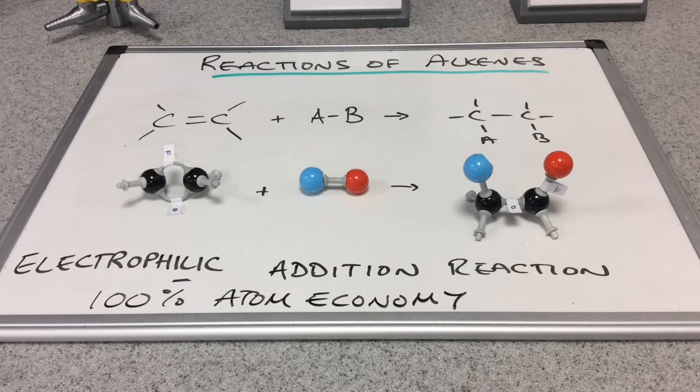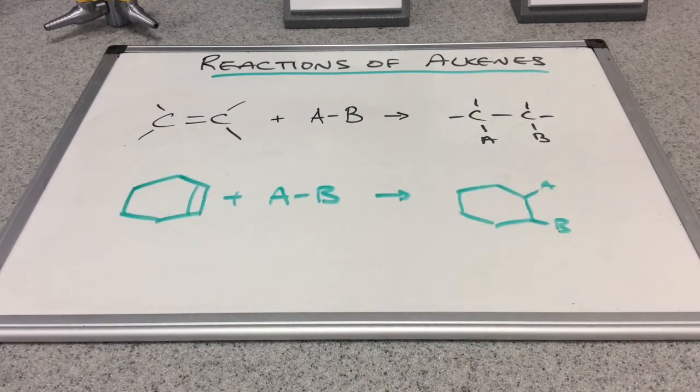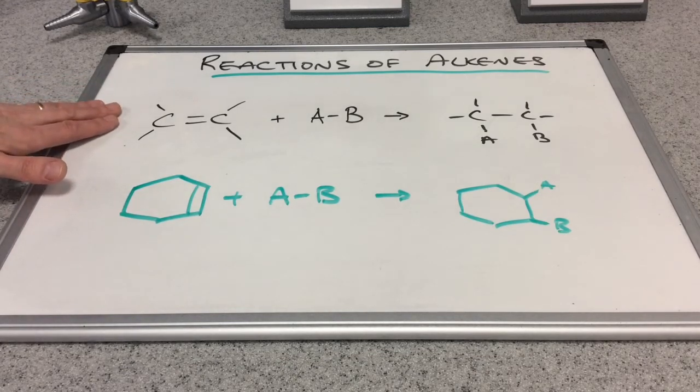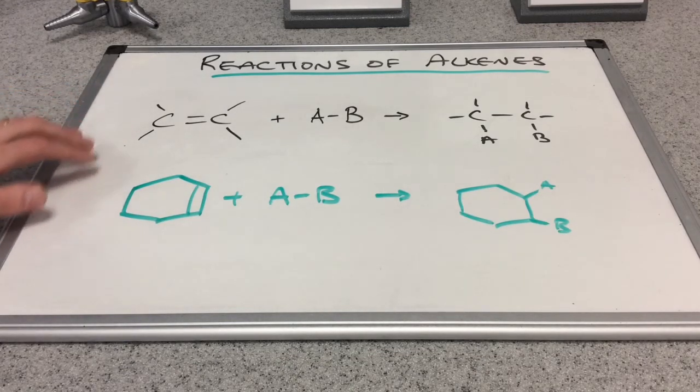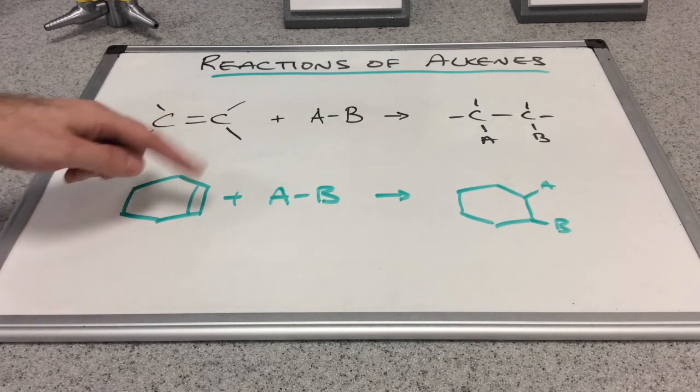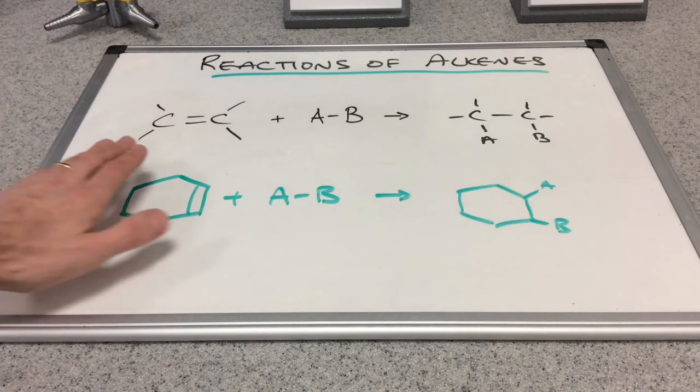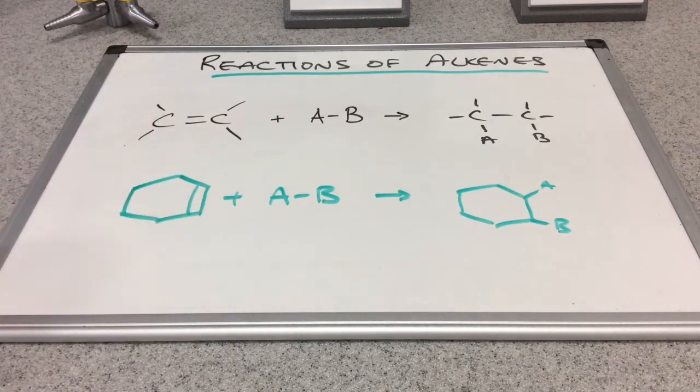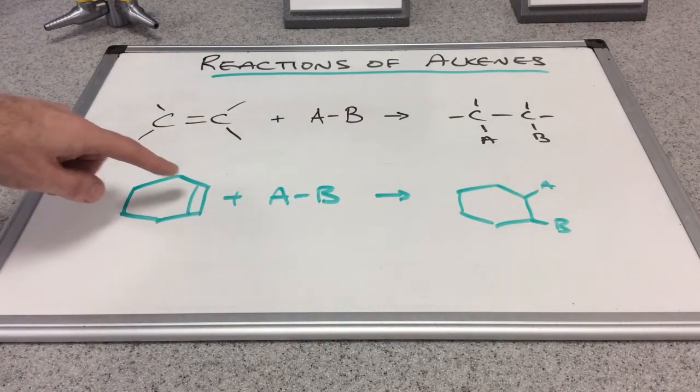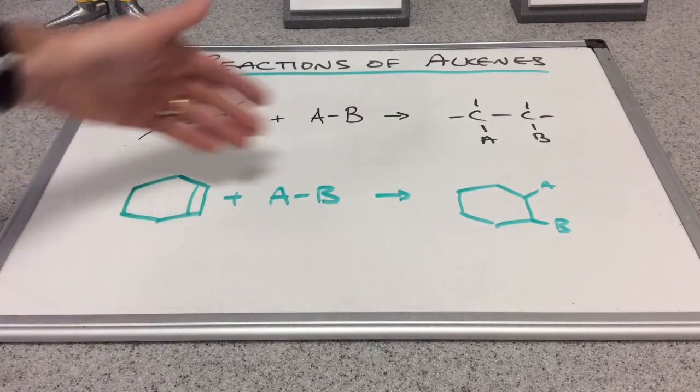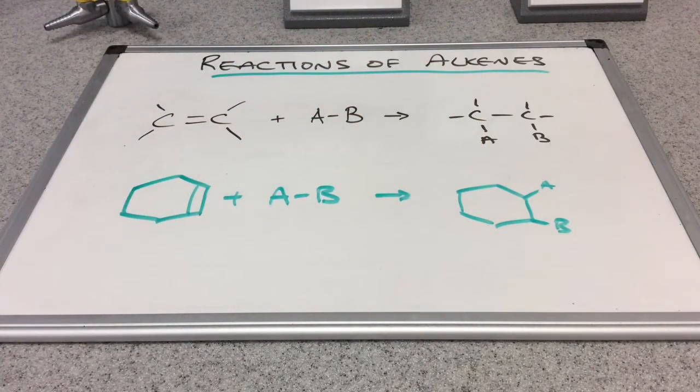The beauty of this AB model is it helps you when you come across slightly less straightforward molecules. We've got a cyclic alkene here. If you think about it, that's basically the same as the earlier example. If we apply the same logic, the double bond is going to break and we're going to put A on one carbon and B on another, giving us something like that.